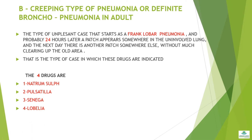The next subtype is the creeping type of pneumonia or definite bronchopneumonia in adults — the unpleasant type of case that starts as a frank lobar pneumonia, and 24 hours later a patch appears somewhere in the uninvolved lung, and the next day another patch appears elsewhere, without much clearing of the old area. The four drugs indicated are: 1) Natrum Sulph, 2) Pulsatilla, 3) Senega, 4) Lobelia.